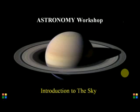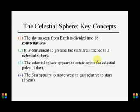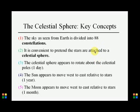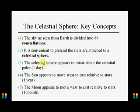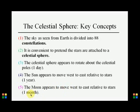The coordinate systems in the sky — the celestial sphere. Key concepts: the sky as seen from Earth is divided into 88 constellations. It's convenient to pretend the stars are attached to a celestial sphere, which appears to rotate about the celestial poles once per day. The Sun appears to move west to east relative to stars over one year, and the Moon appears to move west to east relative to stars over one month.